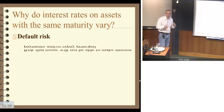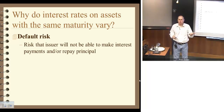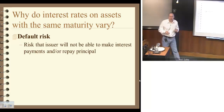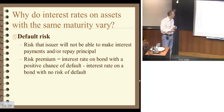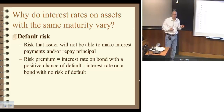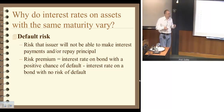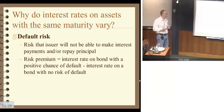First, default risk. That's the chance that the payer on the bond will not be able to come up with the interest payments, or won't be able to come up with the final face value when the bond becomes due. A quick way to estimate the risk premium is to take the difference between the risk-free rate and the interest rate on the relatively risky bond. For example, if the risk-free rate is 5% on a treasury security and the rate on a bond with possible default risk is 12%, that gives us a roughly 7% default premium.